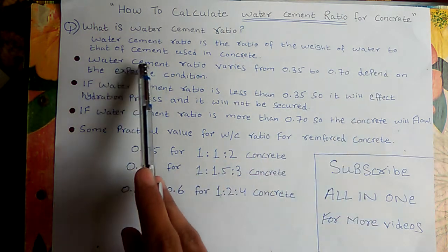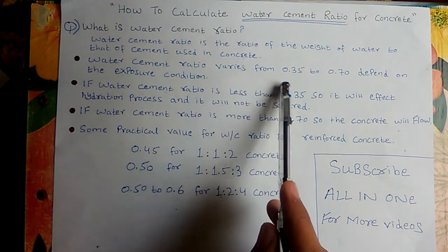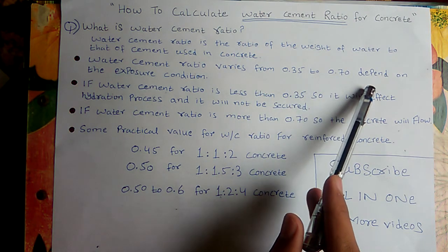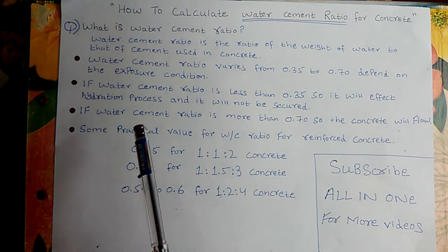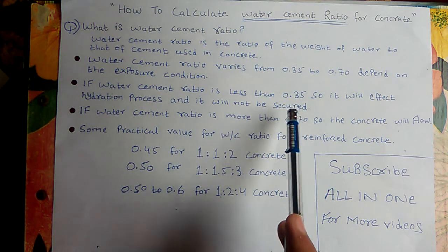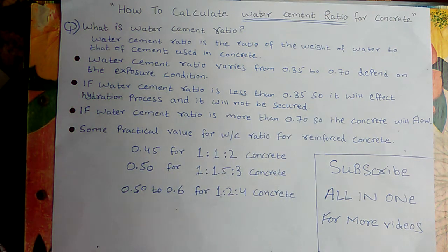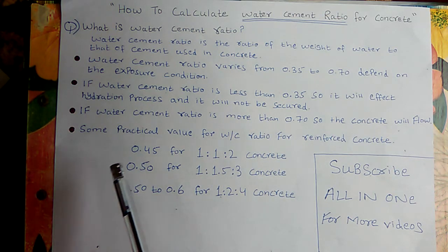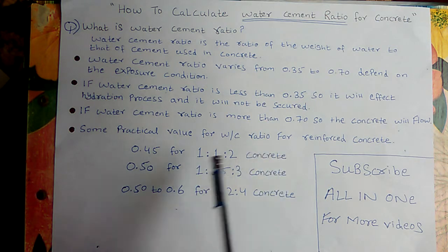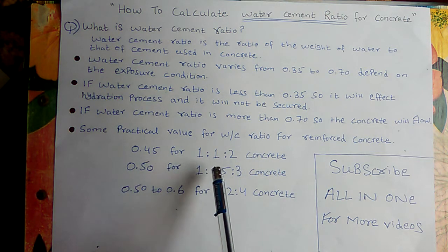Water cement ratio varies from 0.35 to 0.70, and it depends upon the exposure condition. If water cement ratio is less than 0.35, it will affect the hydration process and will not be secure. If water cement ratio is more than 0.70, the concrete will flow.